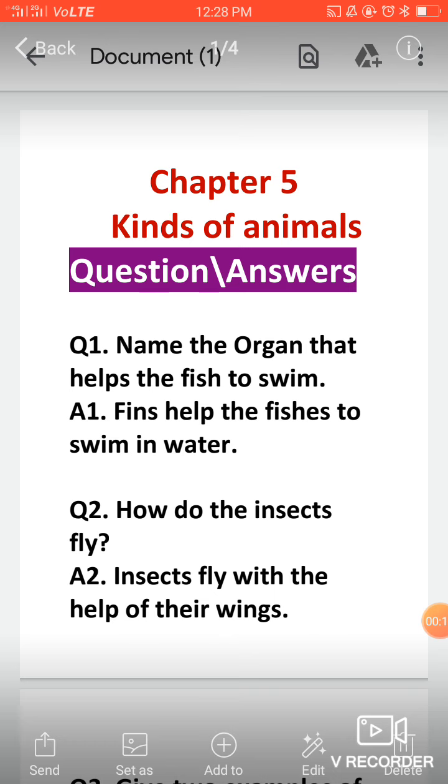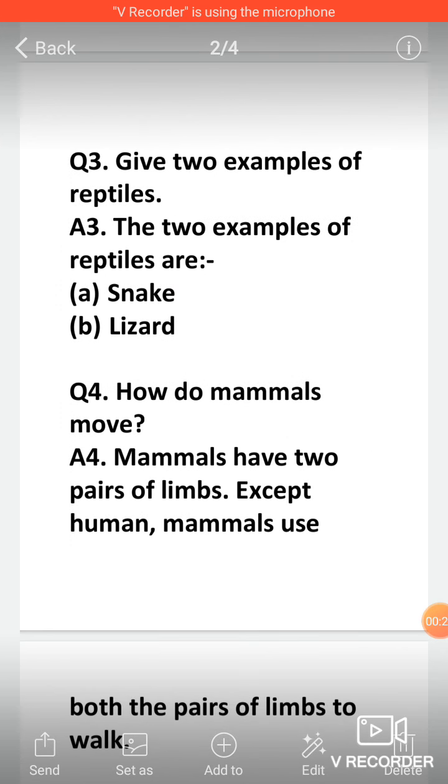Question one was name the organ that helps the fish to swim. Fins help them to swim in the water. How do the insects fly? Give two examples of reptiles. And fourth question was how do mammals move?